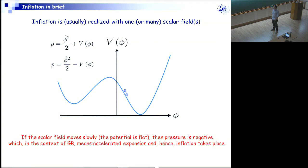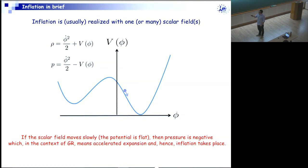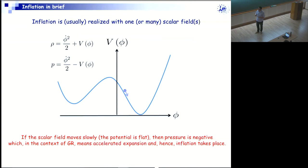How can we produce this phase of inflation? It is believed that inflation is driven by a scalar field. We are talking about something that happens in the early universe, so early universe means high energy, and at high energies the correct framework to describe matter is field theory, so a scalar field seems to be a good candidate. The energy density of a scalar field is given by its kinetic energy plus potential energy, but its pressure is given by the difference between those two quantities. So imagine that you have a potential which is almost flat — the field will roll down very slowly, the kinetic energy will be small, subdominant compared to the potential energy, and therefore the pressure of the system will be negative.